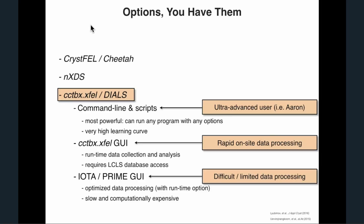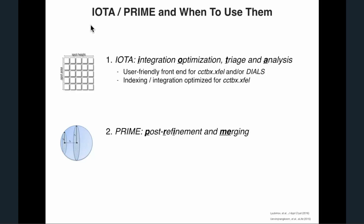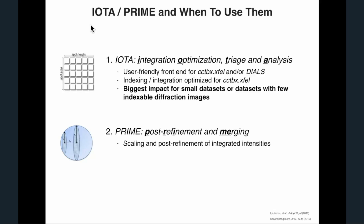IOTA stands for Integration, Optimization, Triage, and Analysis. It's a user-friendly front-end for cctbx.xfel and/or dials — you can run either via IOTA. IOTA itself is not a data processing algorithm, but on top of that it has an indexing and integration optimization algorithm to get the most out of cctbx.xfel data. The biggest impact is for small data sets or those with just a few indexable diffraction images. Once done, you follow up with Prime, which stands for post-refinement and merging: it will scale, post-refine, and merge integrated intensities from IOTA, cctbx.xfel, or dials.